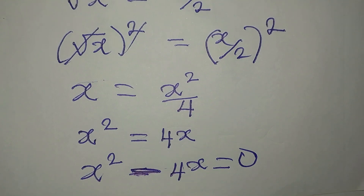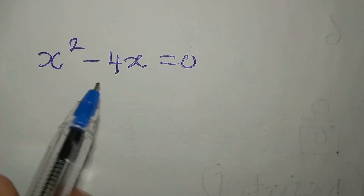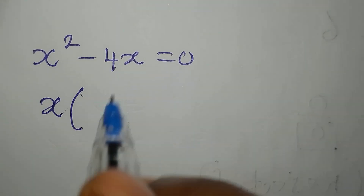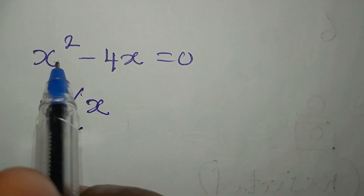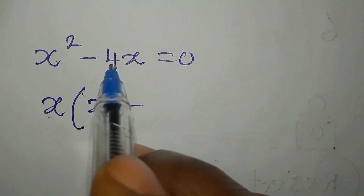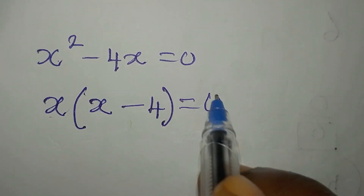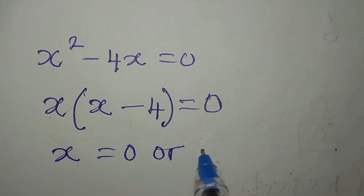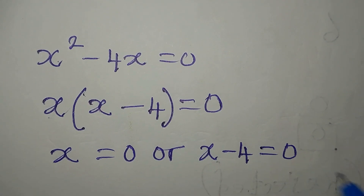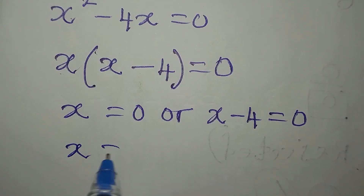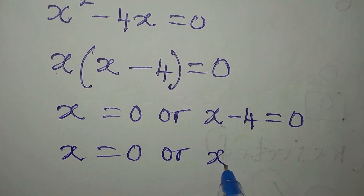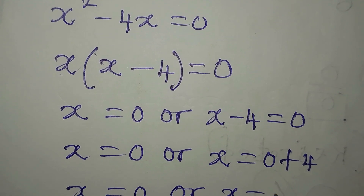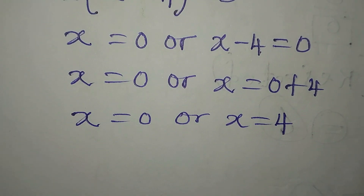We have x squared minus 4x equals 0, and x is the common factor. So we write x times (x minus 4) equals 0. From here, x is equal to 0, or x minus 4 is equal to 0, giving us x equals 4. So these are the two solutions: x equals 0 or x equals 4.